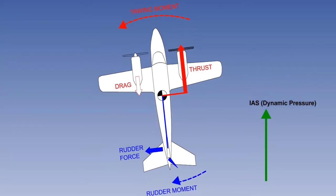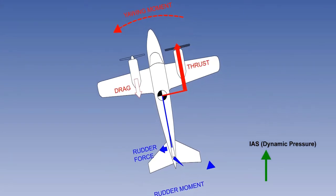However, any decrease in the IAS will reduce the rudder force, and the aircraft will yaw uncontrollably towards the dead engine.